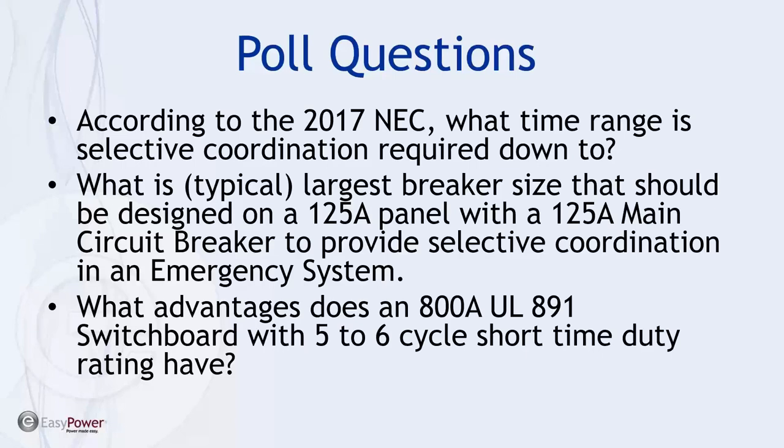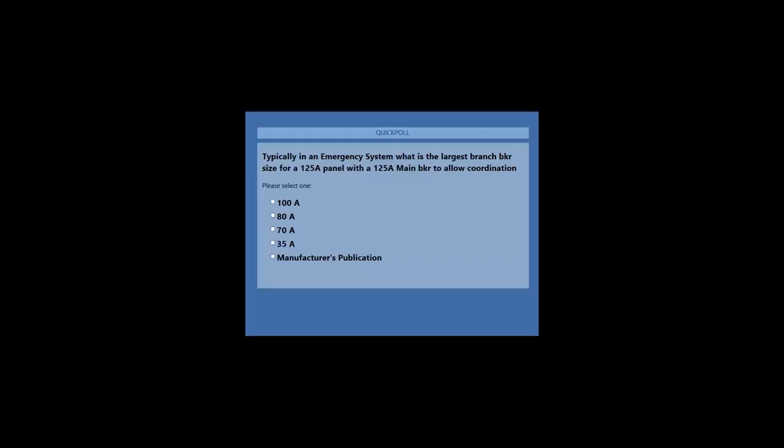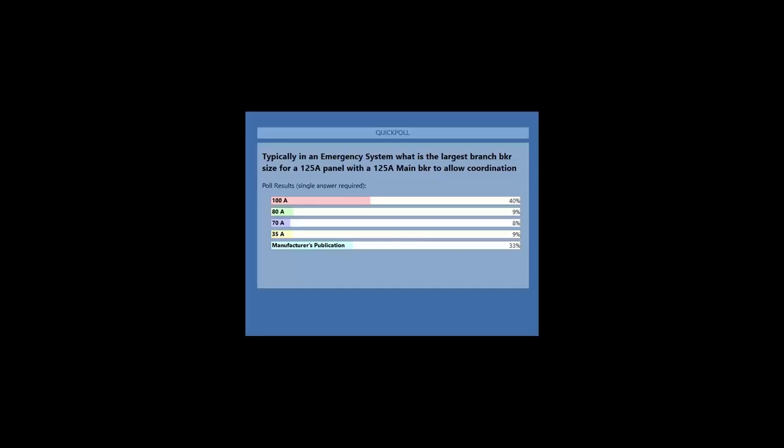We have a wide distribution, and we'll get the answer from the presentation as we get into it. The second is, what is typically the largest breaker size that should be designed on a 125 amp panel with a 125 amp main circuit breaker to provide selective coordination in an emergency system? This is one that comes up frequently when we're talking about coordination and the need to coordinate an emergency system.